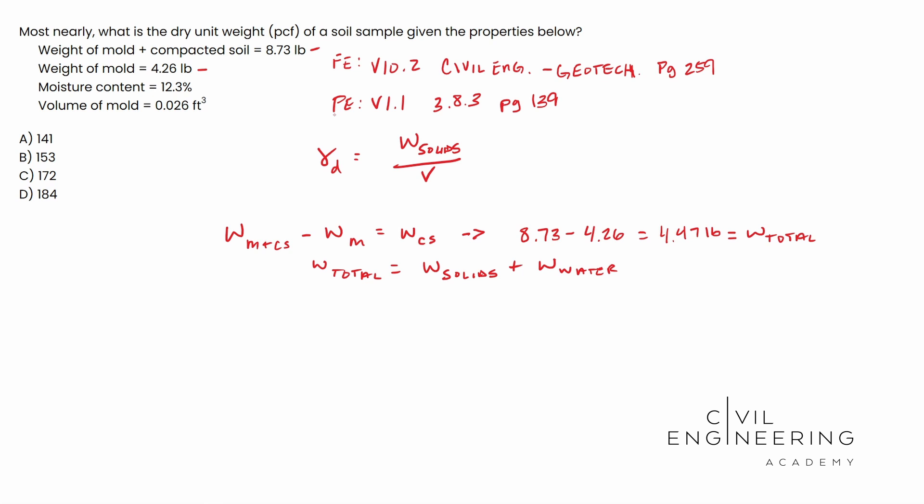And so I'm going to go ahead and write that down here. Weight total is equal to the weight of the solids plus the weight of the water. I don't have to write air because air is weightless. Weight total, there's a formula in the manuals: weight total is the weight of the solids times one plus w. That lowercase w is your water or moisture content. So we have a capital W, which is the weight, and then we have a lowercase w, which is your moisture content.